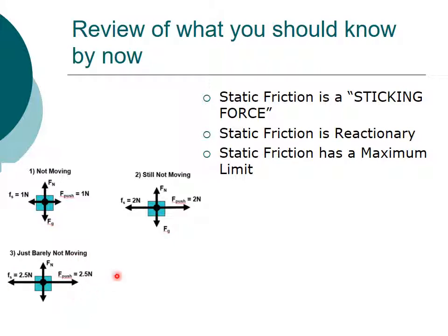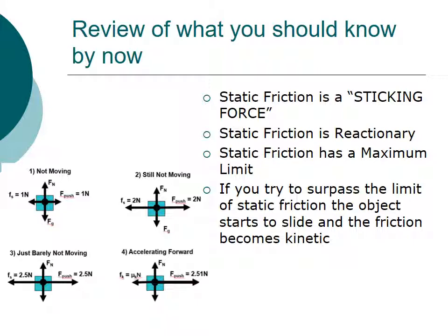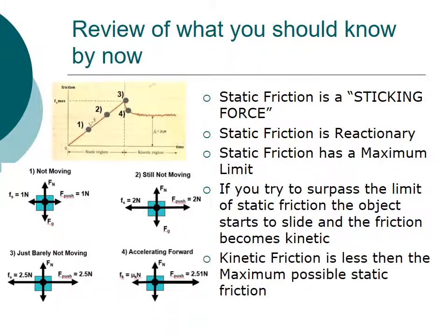It can only get so large. In this case, this is the point right before the object is about to move. So 2.5 newtons is the maximum I can push and still have static friction be a value and have it be static. If I surpass this limit, like if I push at 2.51, then all of a sudden static friction disappears. There is no more static friction, and the friction now becomes kinetic friction.